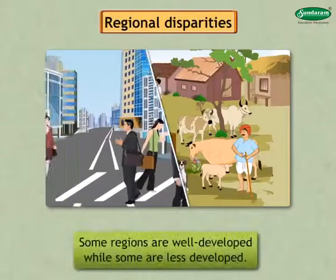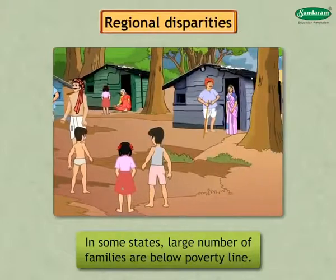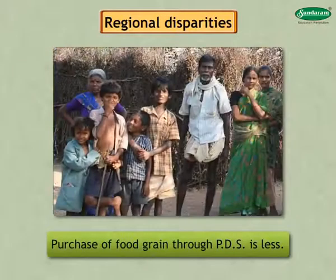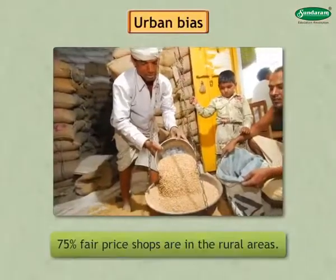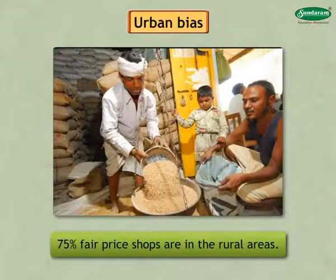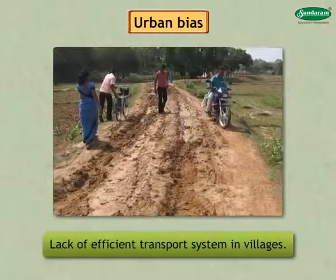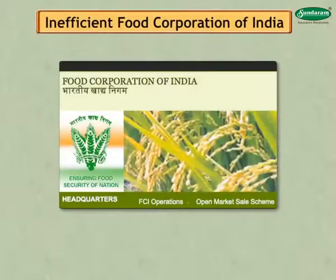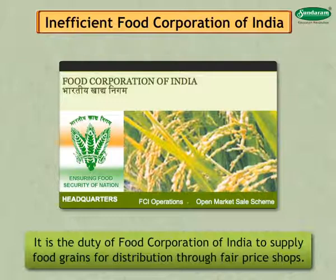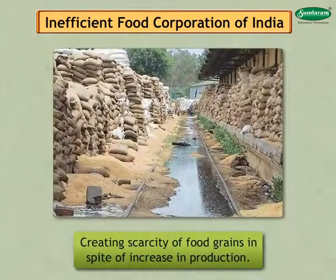Regional disparities exist — some regions are well developed while some are less developed. In some states, a larger number of families are below poverty line, but the purchase of food grain through PDS is less, indicating that most people do not enjoy the benefits of PDS. Urban bias is another drawback: nearly 75% of fair price shops are in rural areas, but the offtake of food grains through PDS is more in urban areas, because lack of efficient transport in villages prevents food grains and kerosene from reaching rural fair price shops. Additionally, it is the duty of the Food Corporation of India to supply food grains for distribution, but excess stock is not stored properly, creating scarcity despite increases in production.